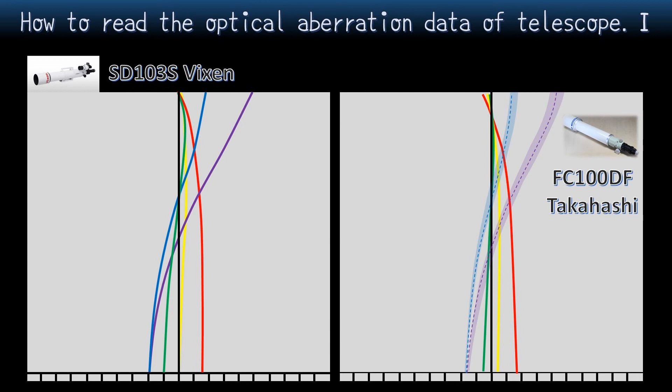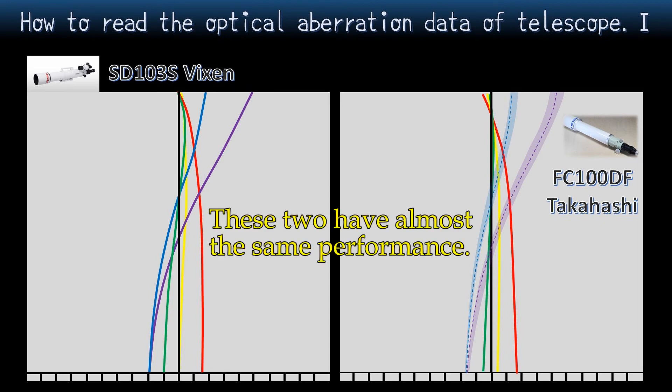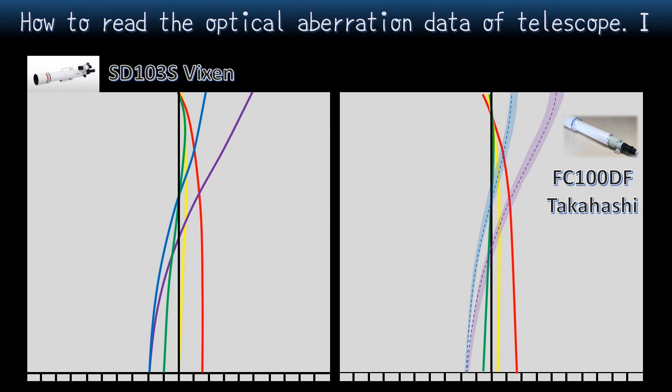Including the blue halo by 40%, its performance will be almost the same as SD-103S. From the viewpoint of optical aberration, there is no difference between these two telescopes. So we can find out that Vixen used Ohara FPL-53 to bring out the same performance as fluoride.